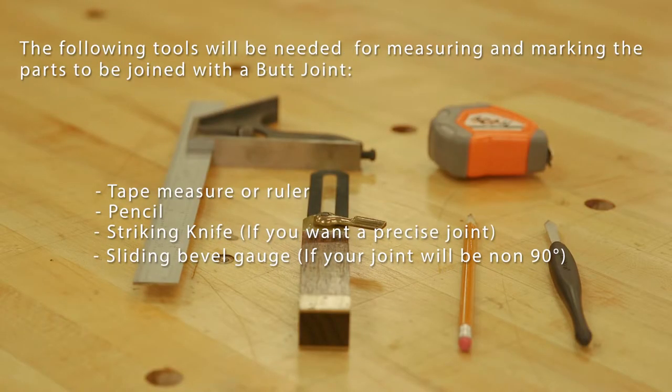Once the size and position of the joint has been decided on, it's time to measure and lay out the butt joint. The following tools will be needed for measuring and marking the parts to be joined with a butt joint: a tape measure or ruler, a pencil, a striking knife if you want a precise joint, and a sliding bevel gauge if your joint will be non-90 degrees.